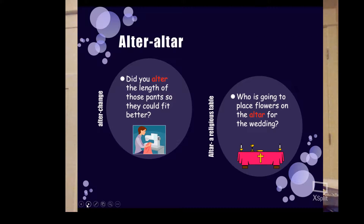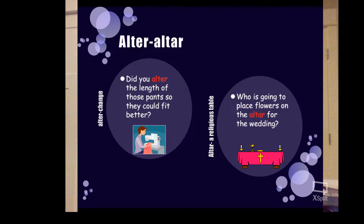Next, we have alter versus altar. Alter with an E means to change something — 'Did you alter the length of those pants so they could fit better?' An altar with an A is a religious table — 'Who is going to place flowers on the altar for the wedding?'